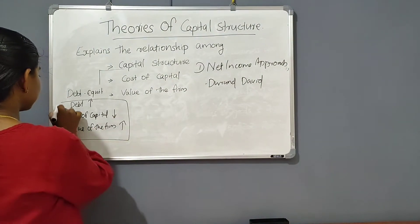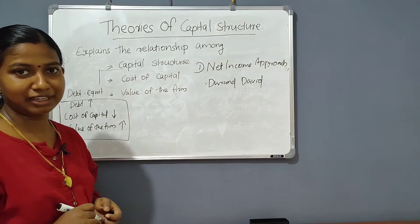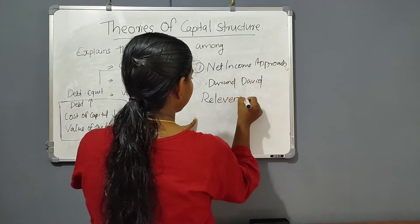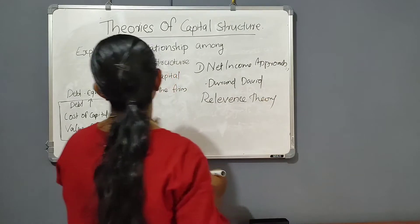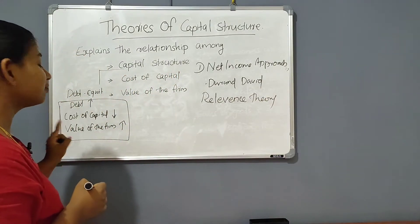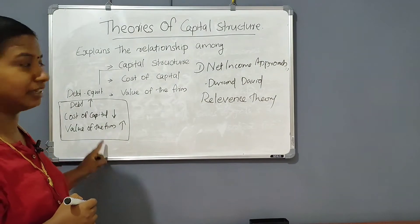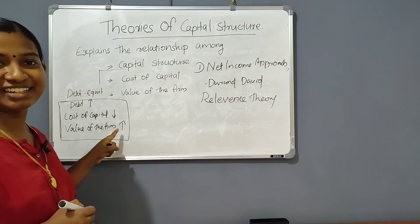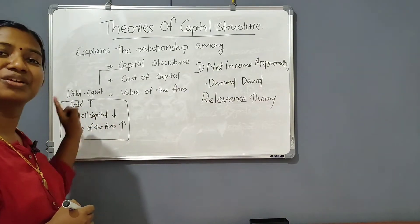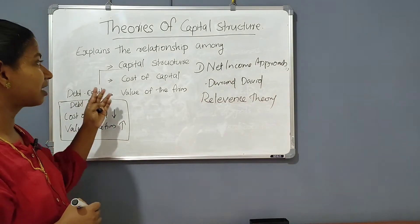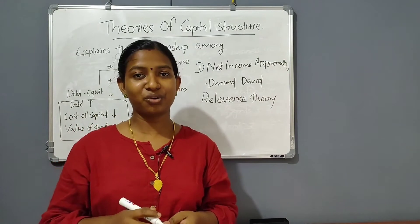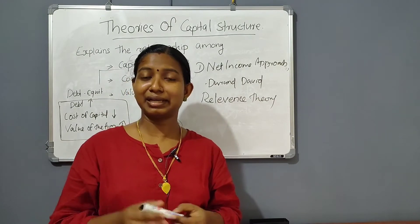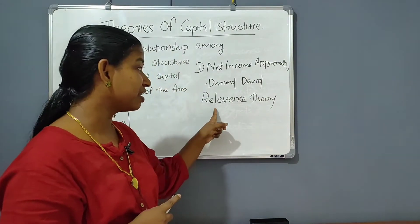We will explain the theory of this relationship — we are going to explain the Net Income approach. This is the theory of relevance. What is relevance theory? The capital structure is related to the value of the firm. In the capital structure, the cost of capital affects the value of the firm.